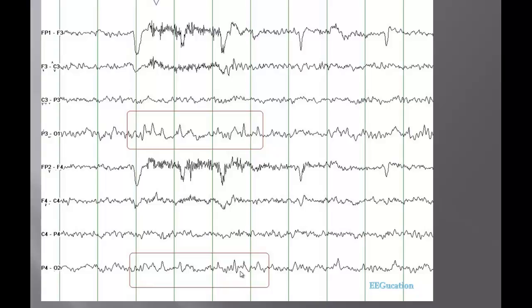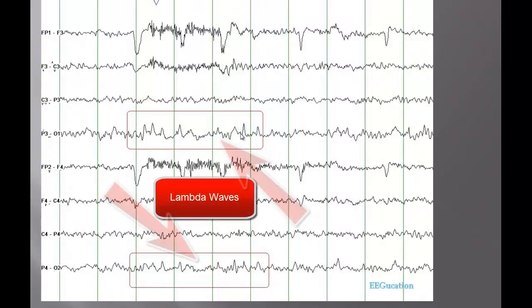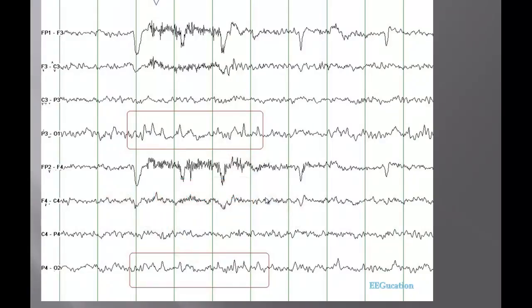Well that gives the answer, these are lambda waves. These sharp transients, sometimes can be biphasic, sometimes can be triphasic. These are sharp transients in the occipital head region when a person is awake and scanning a picture or scanning an object or design. Do not call these epileptiform activity and I will show you some other EEGs that will help you differentiate one from the other.